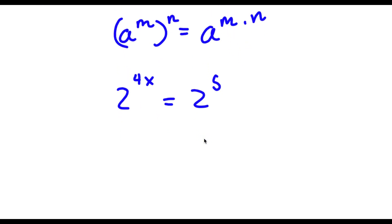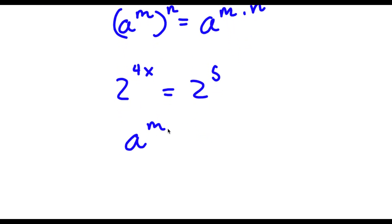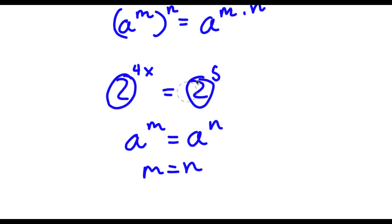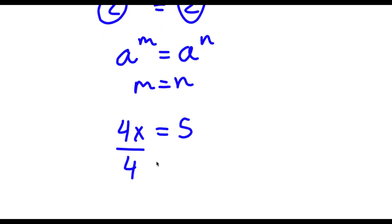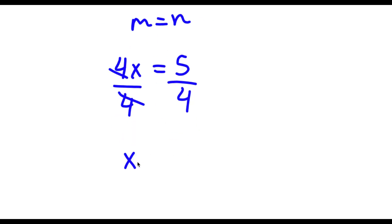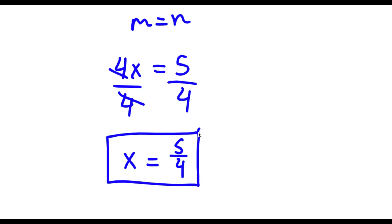Now, if I have something in the form a to the power of m is equal to a to the power of n, then this means that m is equal to n. So in this case, as you can see, both of these bases are the same. So that means both the exponents are the same as well, meaning 4x is equal to 5. This is a simple equation to solve — all I have to do is divide both sides by 4. These two cancel out, and I'll be left with x is equal to 5 over 4. So this is my answer.